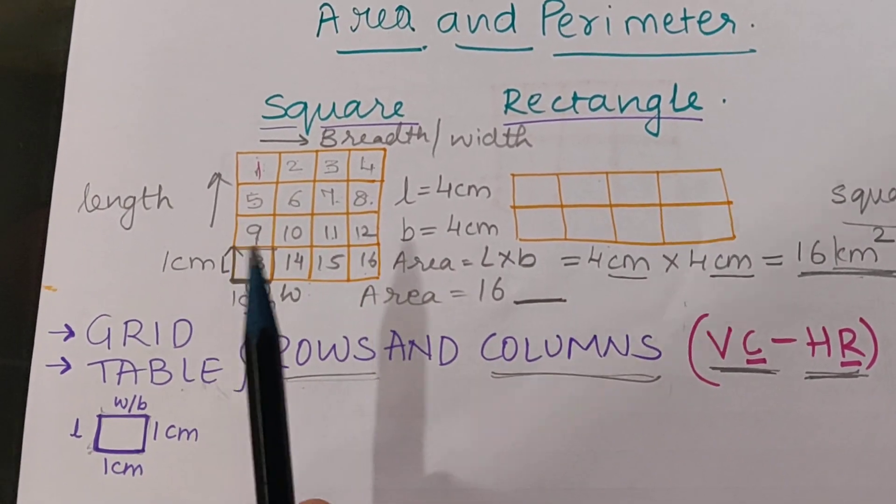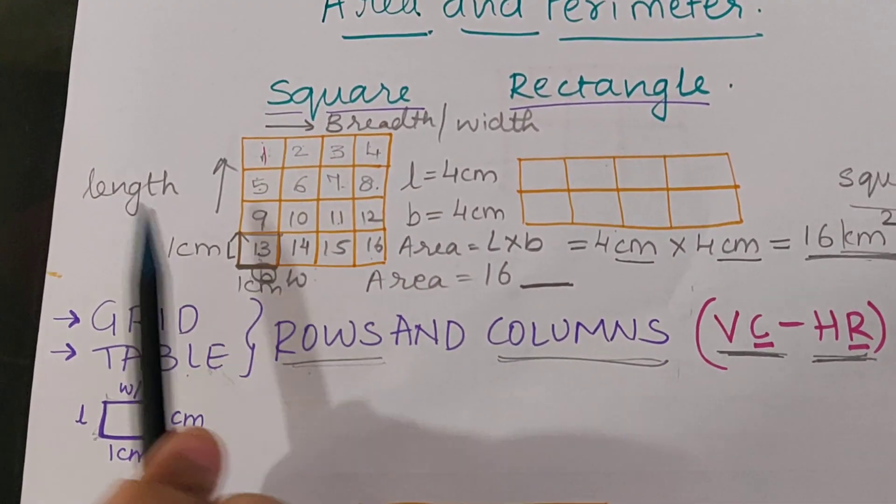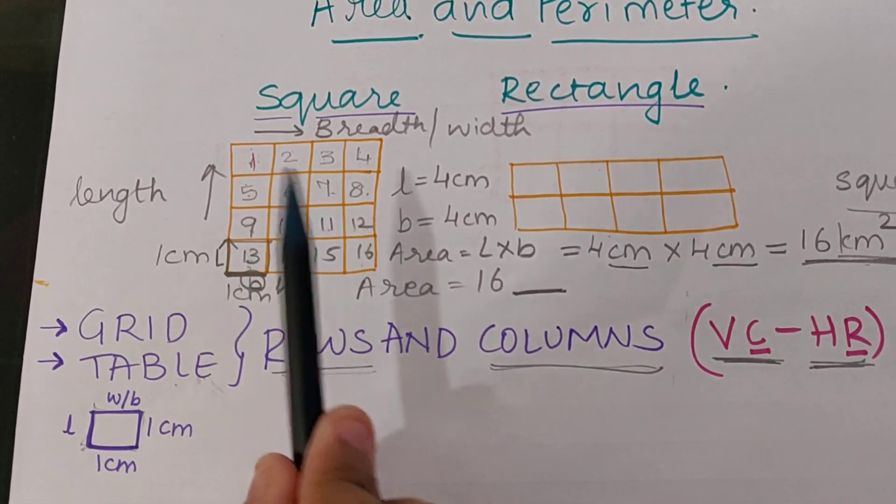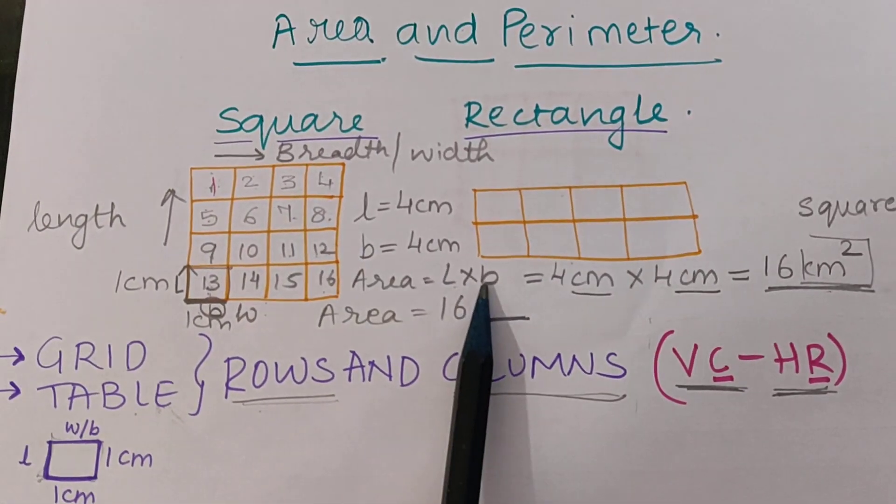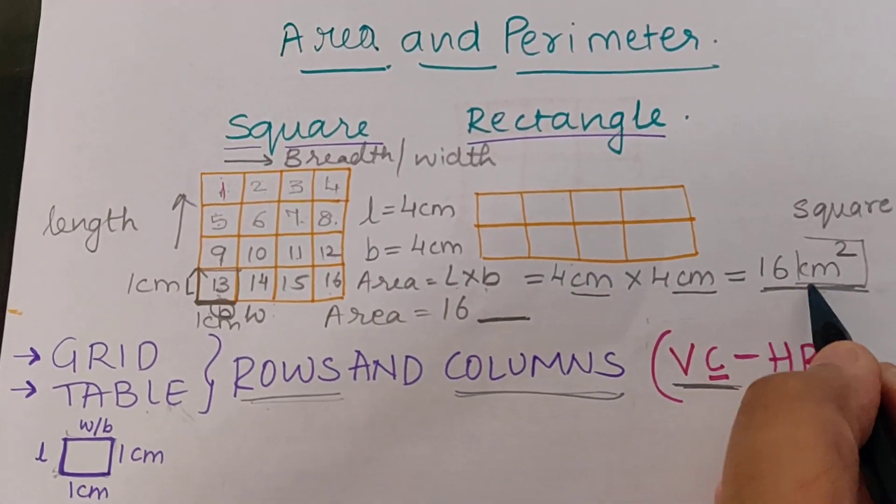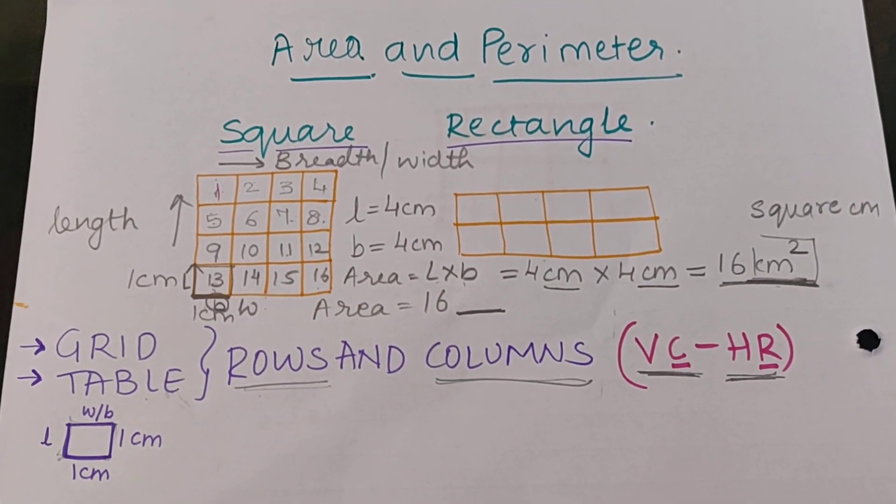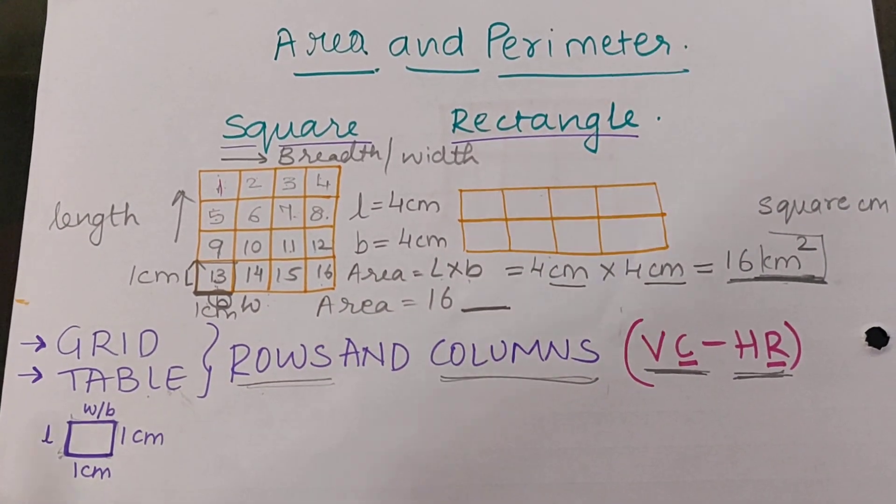In the last video we saw how to find the area of a square by using the formula length into breadth and we know the unit of it. Now how would we find the perimeter of a square?